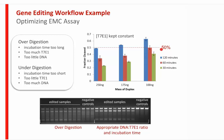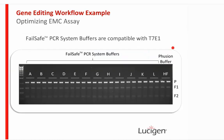The Failsafe PCR system buffers are compatible with T7E1 — a comparison of Failsafe buffers versus standard HF buffer in a T7E1 assay using a known wild type/mutant ratio showed no meaningful difference, confirming compatibility.